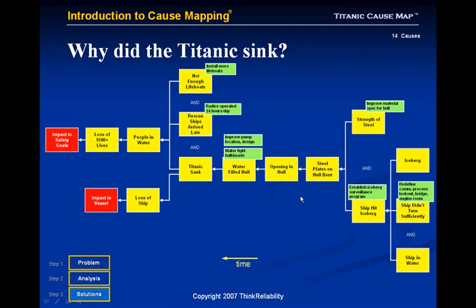More detail can be added to the analysis, but at this level of detail we can already talk about possible solutions. With not enough lifeboats, a solution is to install more lifeboats. With rescue ships arriving late, we could have radios operated 24 hours a day on all ships in the North Atlantic. With water filling the hull, we could improve the pump design and location, and change the design of the bulkheads to make them watertight. The strength of the steel could be changed to make it stronger. We could establish an iceberg surveillance program, and we could refine the communication process between the lookout, the bridge, and the engine room. The cause map shows different ways that the problem can be solved.